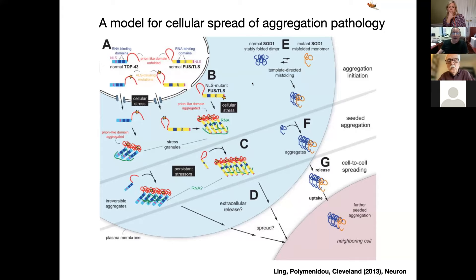The idea is that a protein undergoes a misfolding event and then catalyzes in trans the recruitment of other copies of that protein into larger aggregates, and that seeds of this aggregation can be released from one cell and taken up by a neighboring cell. In principle, this could be neuron-to-neuron spread, glial-to-glial spread, or glial-to-neuron spread.